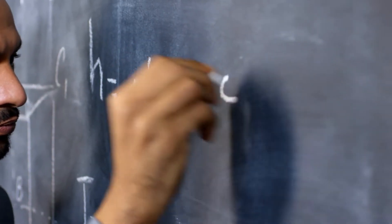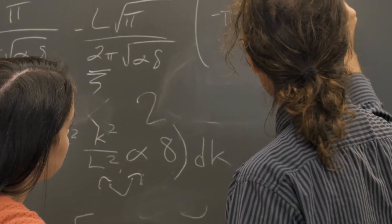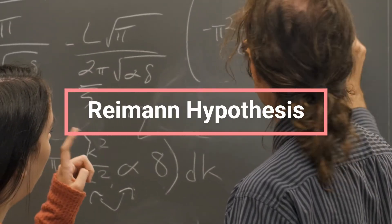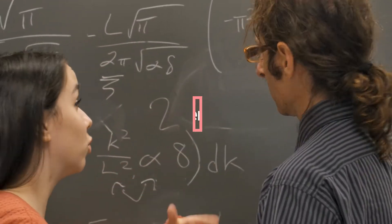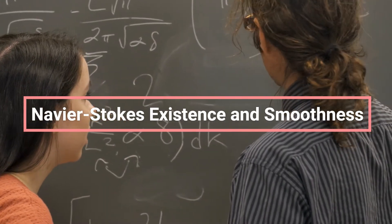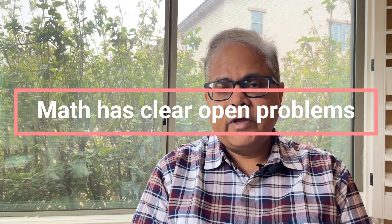There are more math problems which are still considered open problems — for example, the Riemann hypothesis, the Navier-Stokes existence and smoothness, the Hodge conjecture, and so on. In mathematics there is a very clear process of defining an open problem: people need to prove a certain theorem and do a lot of mathematics to come up with the proof. It is very clear in mathematics as to when a problem has been solved and when an open problem has been closed.